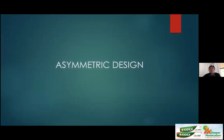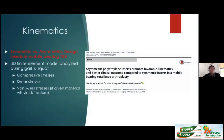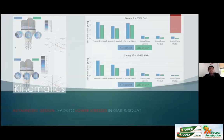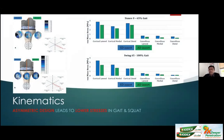Asymmetric designs can include distal femoral cut asymmetry, proximal tibial implant asymmetry, or both. A group in Italy compared symmetric versus asymmetric designs in mobile bearing total knees and found that asymmetric designs overall lead to lower compressive, shear, and material stresses during gait and squat. While not always statistically significant, asymmetric designs seem to offer more favorable stress transfer to the tibia.